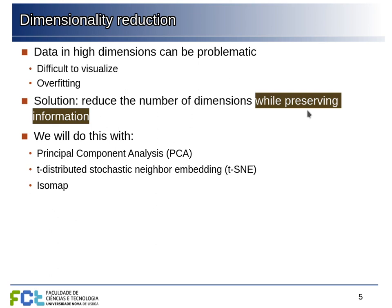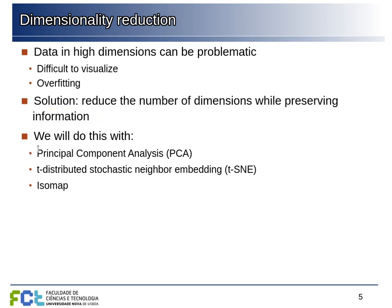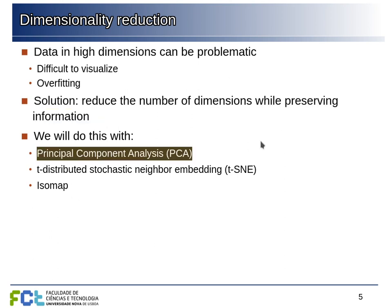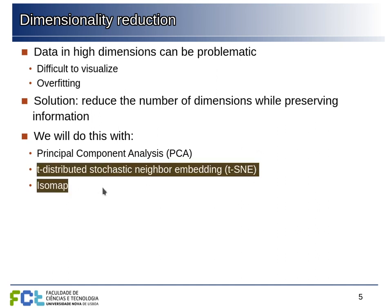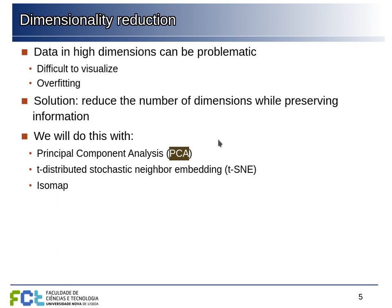We cannot simply discard features at random because what is left may not be useful. We're going to start by looking at a classical statistical technique: principal component analysis. I'm not going to detail the mathematics much because you will cover this in other courses. But then we'll move on to some manifold learning techniques that take a different approach. The idea of starting with PCA here is to give a notion of the contrast between PCA, a classical widely used technique, and more recent manifold learning techniques that have improved properties.